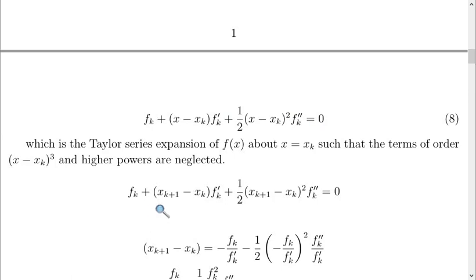The next thing you have to do is to make this the subject of formula. Making this the subject of formula, we have minus fk over f prime k minus 1 over 2 in brackets minus fk over fk prime squared then fk double prime over fk prime.